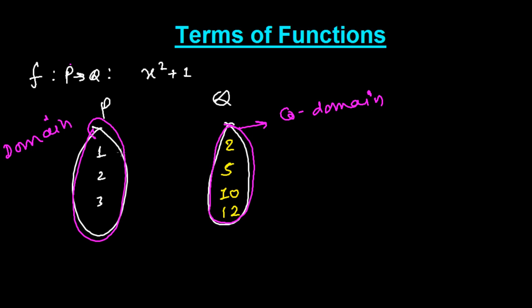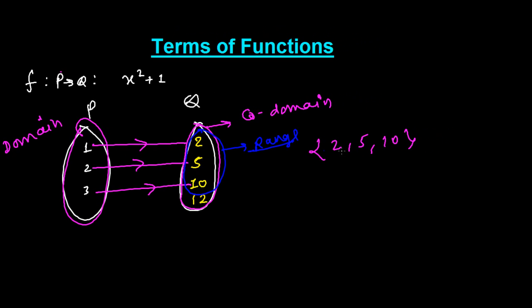And which are related, especially which are related, like 1 is related with 2, 2 is related with 5, 3 is related with 10. So the set of 2, 5, and 10, only this can be said range. So this is called range.